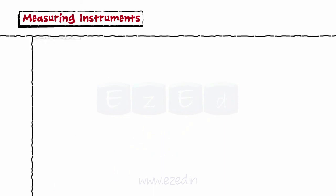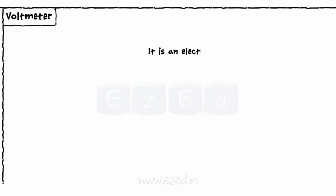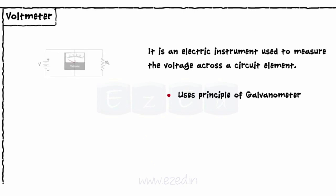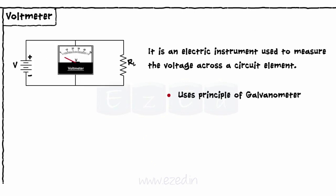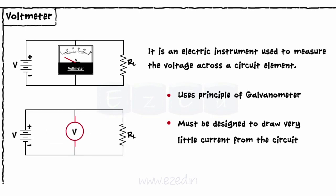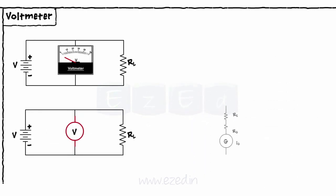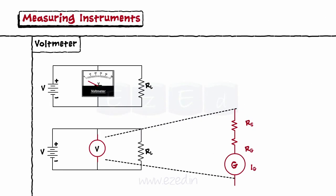Second device is the voltmeter. It is an electric instrument used to measure the voltage across a circuit element. It also operates on the principle of galvanometer. A voltmeter is placed in parallel with a circuit element to measure the voltage drop across it and must be designed to draw very little current from the circuit so that it does not appreciably change any parameter of the circuit it is measuring. To accomplish this, a large resistor is placed in series with the galvanometer.